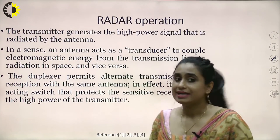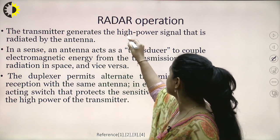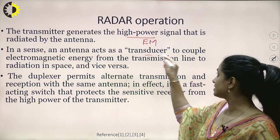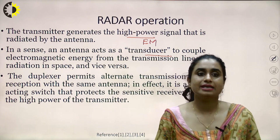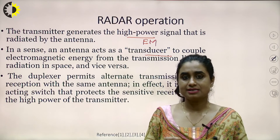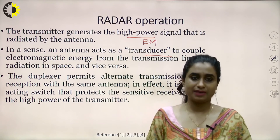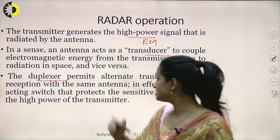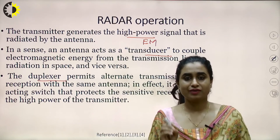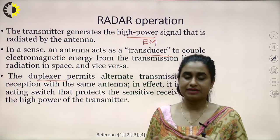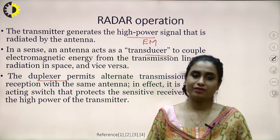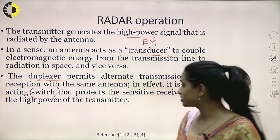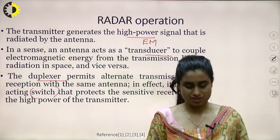The transmitter generates a high-power signal which is radiated by an antenna. These high-power signals are electromagnetic waves. The antenna acts as a transducer to couple electromagnetic energy from the transmission line and radiate it into space. The duplexer permits alternating transmission and reception — first the electromagnetic wave is transmitted, then reception mode is enabled. The duplexer acts as a fast-acting switch that also protects the sensitive receiver from the high power of transmission.